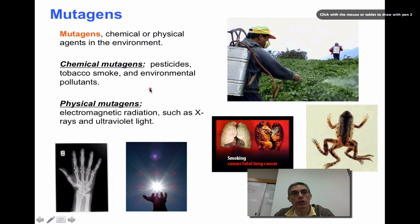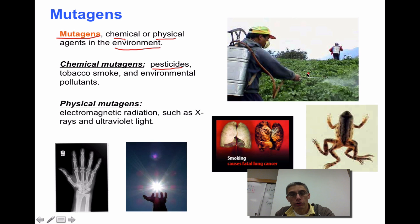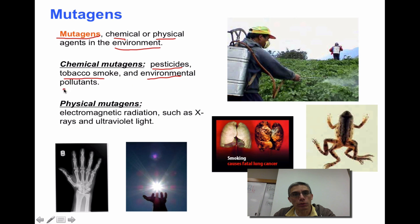When you think about mutations, you also need to think about those things in the environment that might cause mutations to occur. We give a special name to those causes — they're called mutagens. These mutagens can be chemical or physical agents in the environment. A chemical mutagen would be something like a pesticide you might spray on a crop or lawn, or things like tobacco smoke. People who smoke or chew are introducing a chemical mutagen into their body, which might influence their cells and genetic material, as could any other environmental pollutant.